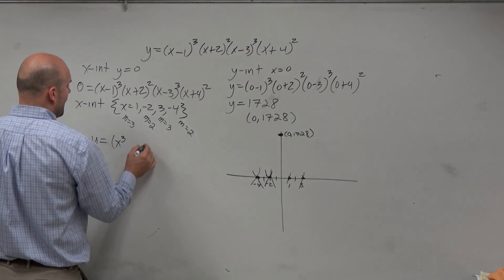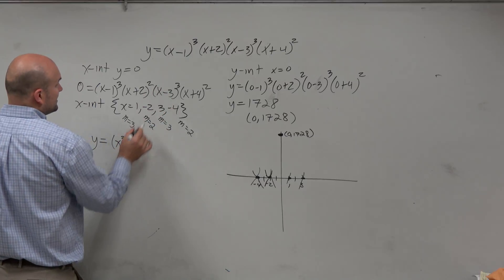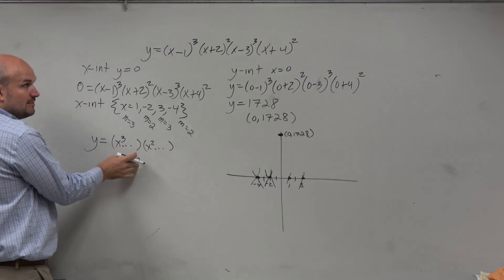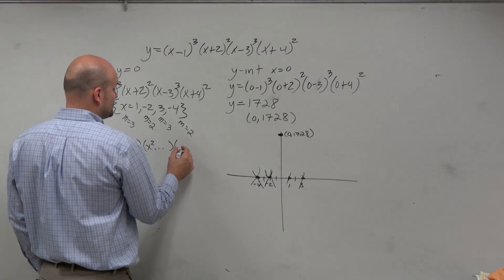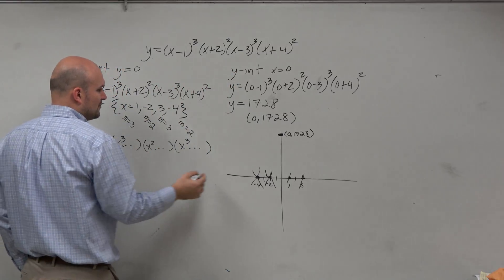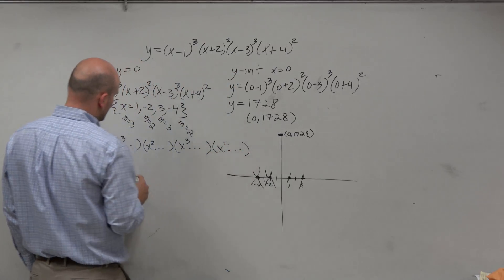If I expanded (x + 2) squared, I would get x squared. Again, we don't care about everything else. We just care about the leading term. (x - 3) cubed would be another x cubed. And (x + 4) squared would just be an x squared. And when we multiply all of those out together, the largest term that we're going to get is x to the 10th power.